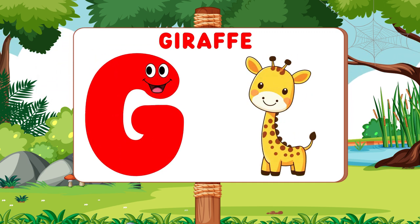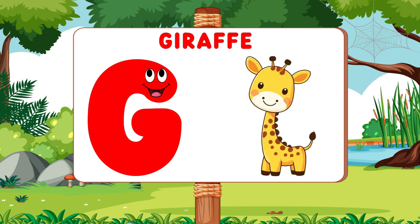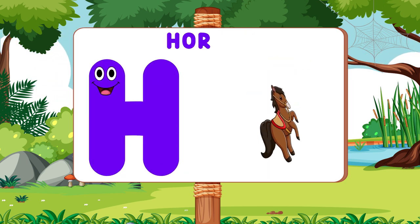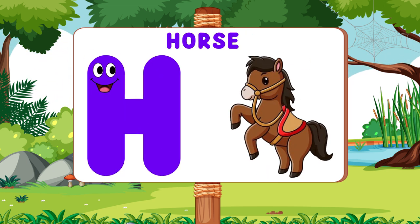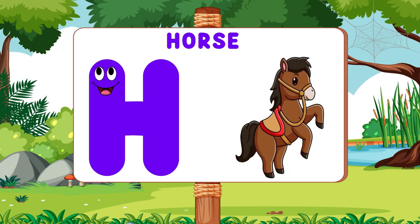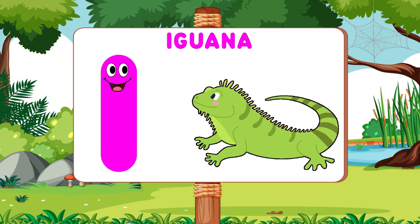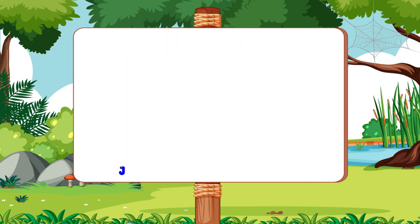G is for Giraffe. G, G. Giraffe. H is for Horse. H, H. Horse. I is for Iguana. I, I. Iguana.